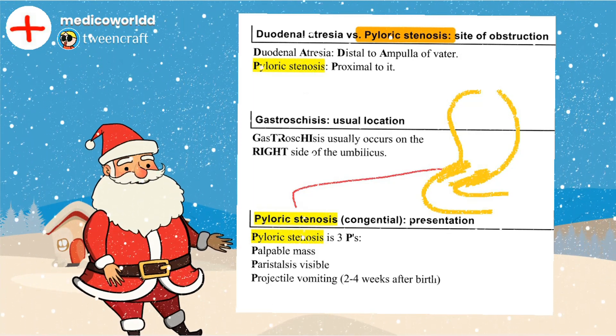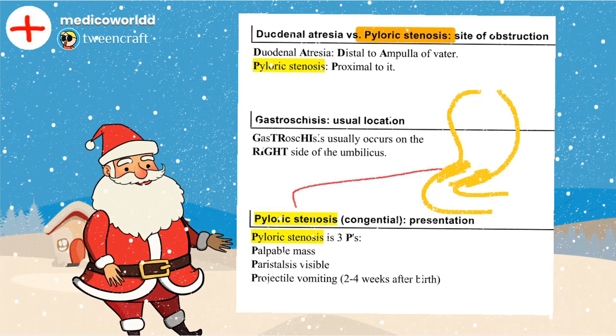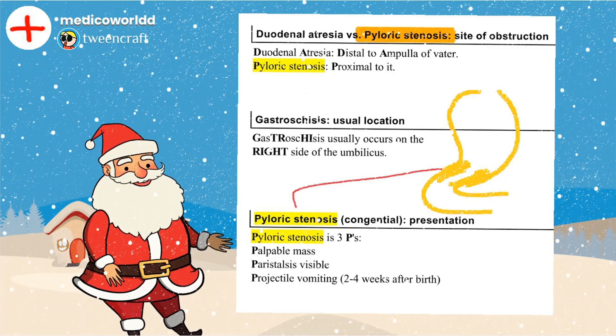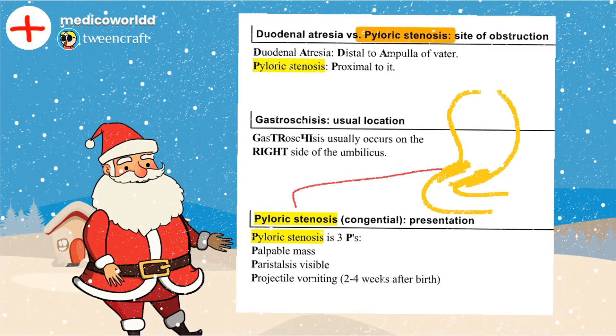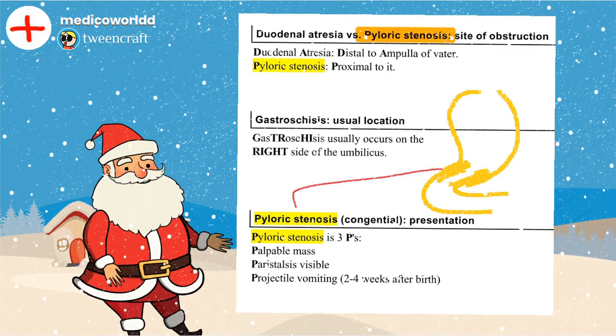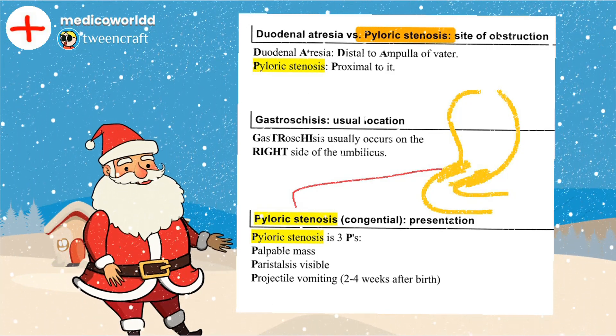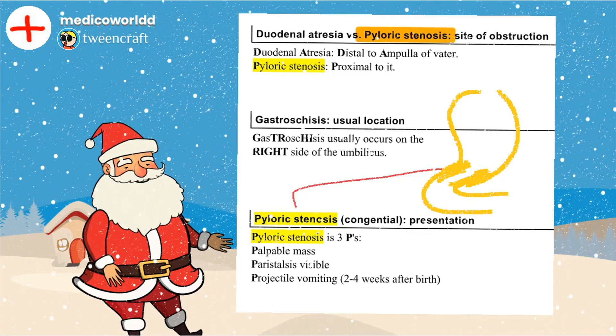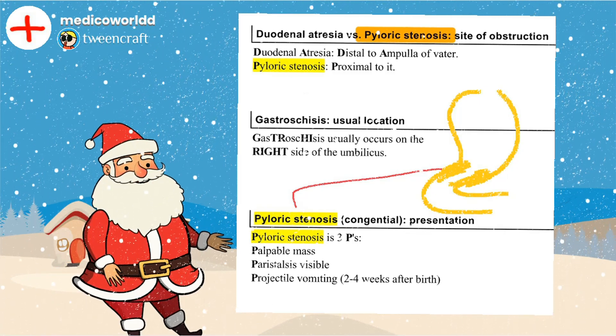The stomach is present on the left side of the body. But the congenital condition gastroschisis is present on the right side of the umbilicus.